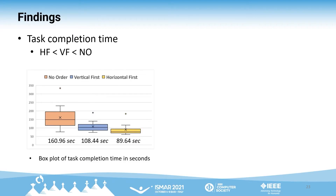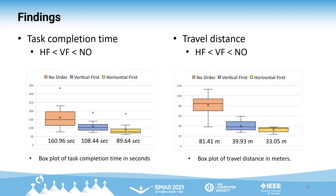As a result, the average time was shortest in the HF condition, followed by VF, then NO condition. The two-step guidance conditions were more efficient than the one-step guidance condition. Similarly, the average distance was shortest in the HF condition, followed by VF, then NO condition.